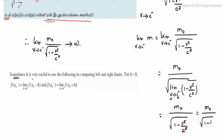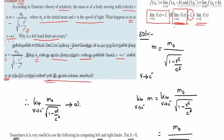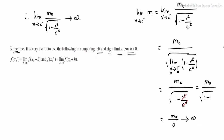For better understanding: it is very useful to use the following approach of computing left and right limits for h greater than 0. The limit as x tends to x0 minus of f(x) equals L, and the limit as x tends to x0 plus of f(x) equals L — these are the left and right limit approaches.